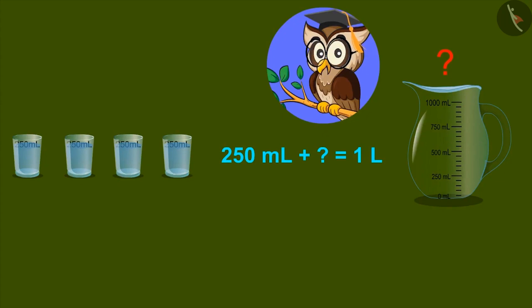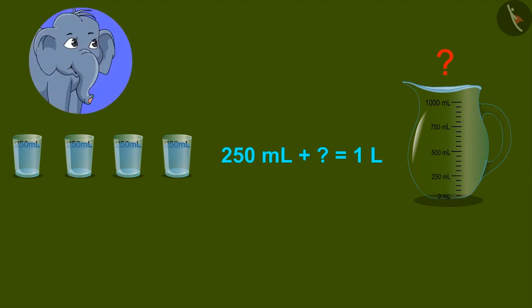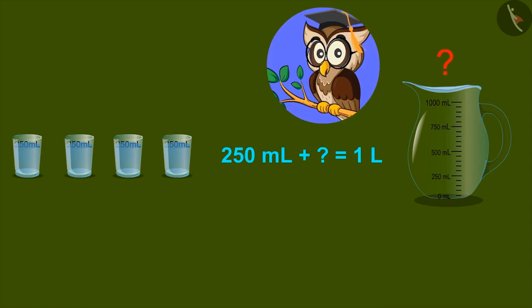For example, do you think that glasses of 250 ml can be combined to form one liter? Yes, it can be made. No, I don't think so. One liter can be made out of 250 ml.